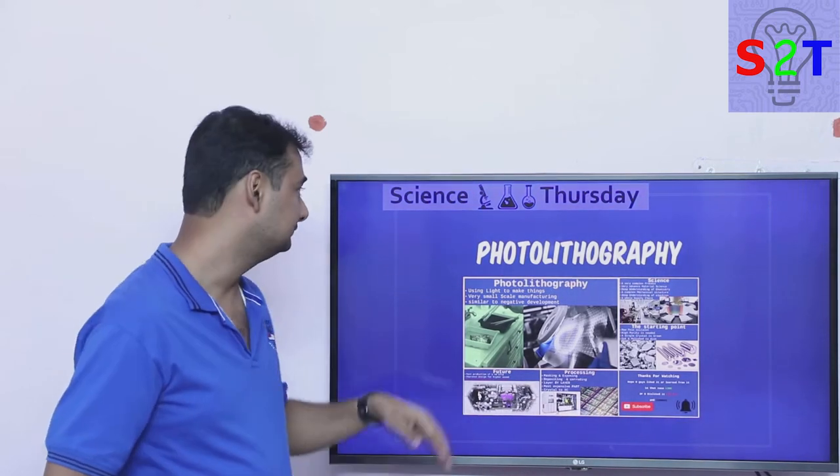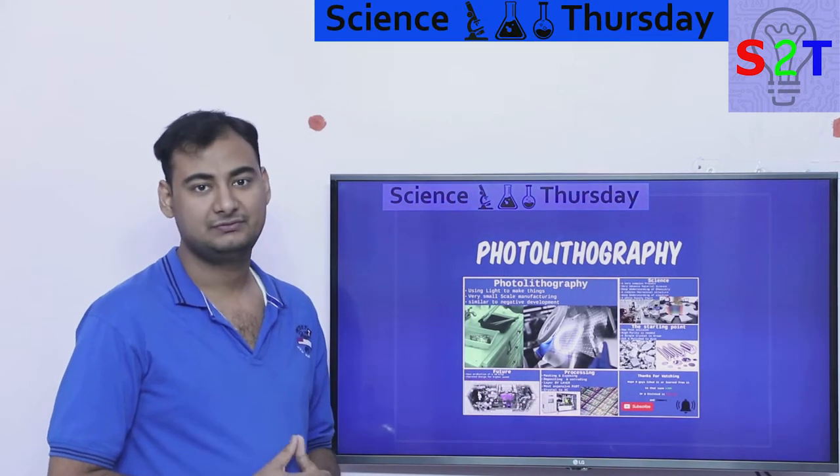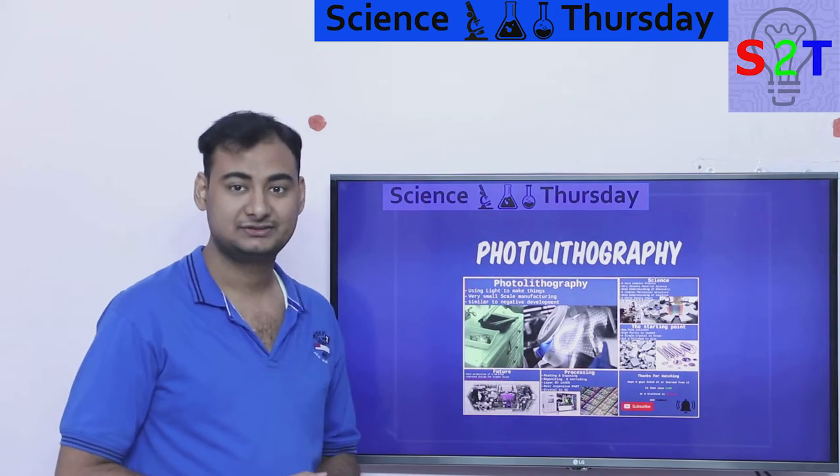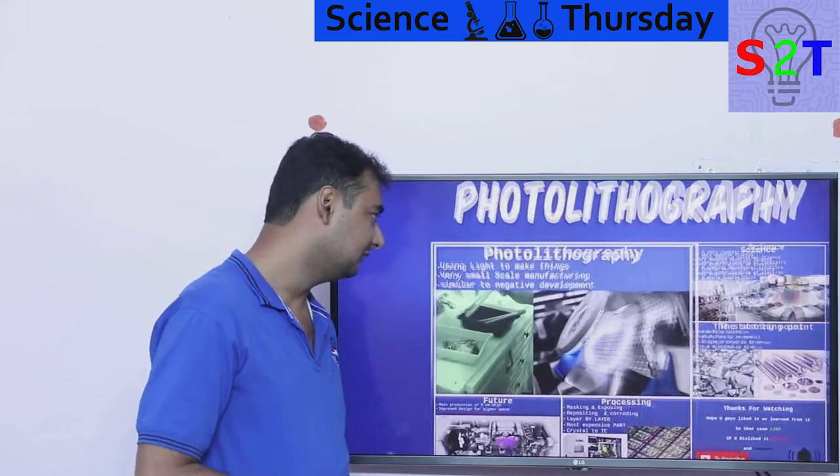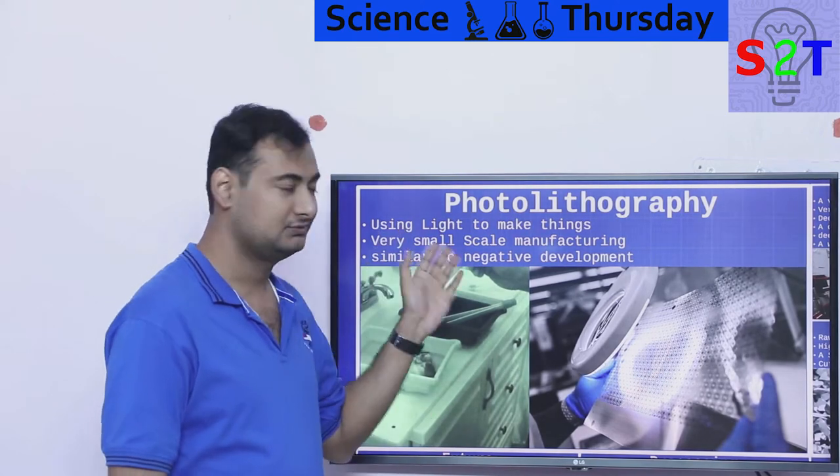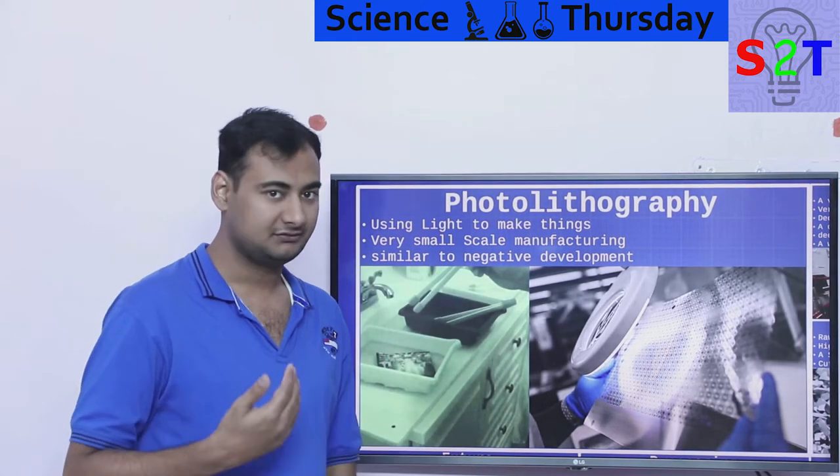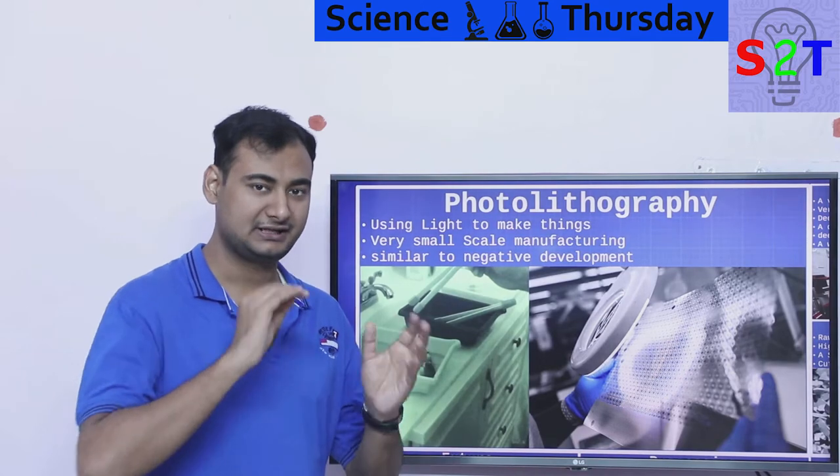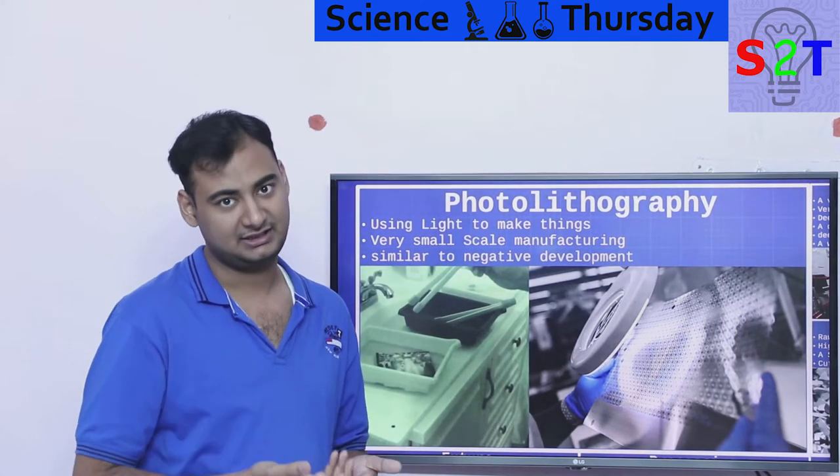Hello YouTube viewers, welcome to my show Science Thursday. In today's episode we're going to talk about photolithography, so let's dive right into it. Well, what does photolithography mean? Simply put, it is using light to make something. However, you're going to do it and it's never like light itself is making something like a laser or something like that.